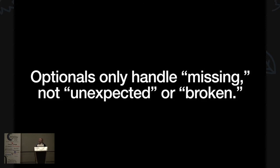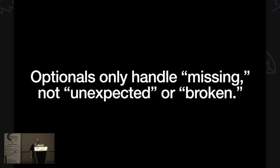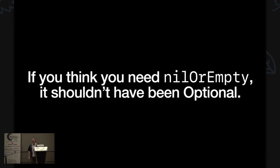Making everything optional doesn't even protect you all that much. If an enum has an unexpected value, or something you thought was always an int is sometimes a string because you're talking to PHP, the whole parser will still throw. The only thing optional means is it's okay for it to be missing — which sometimes is in fact okay, but even then you probably want a default value, likely empty. The only time you really mean nil is when missing is semantically different from empty, which does occasionally happen but is kind of rare. If you find yourself nil coalescing a lot, or if you ever think you need a nil-or-empty extension, you're using optionals too much. Stop it.